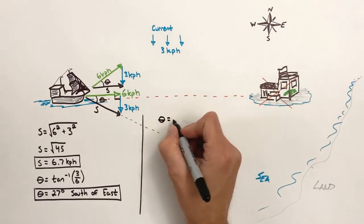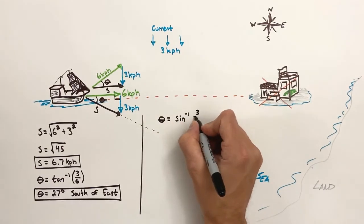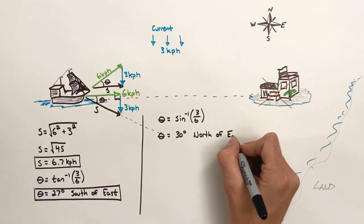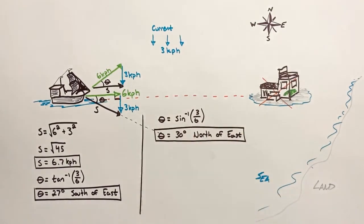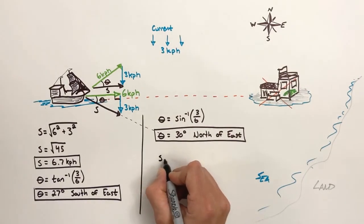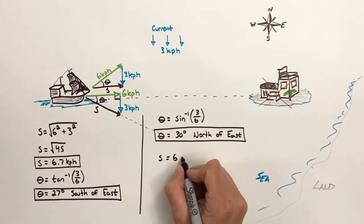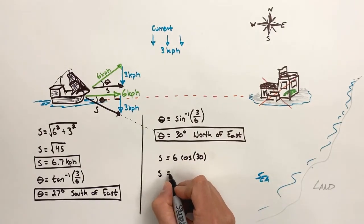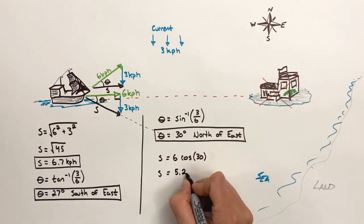Knowing the hypotenuse and the opposite side of the triangle, we're able to solve for the angle, and we find the ship needs to be pointed 30 degrees north of east. In this case, the resultant vector — the actual speed of the ship — is the adjacent side of this right triangle, not the hypotenuse. You can't always say the hypotenuse of a triangle is the resultant. Knowing the hypotenuse and the angle, we find the horizontal or easterly component, and the ship will be moving towards the east at 5.2 kilometers per hour.